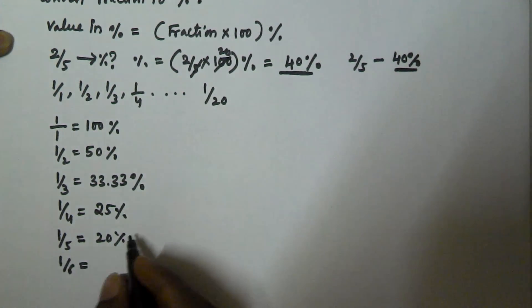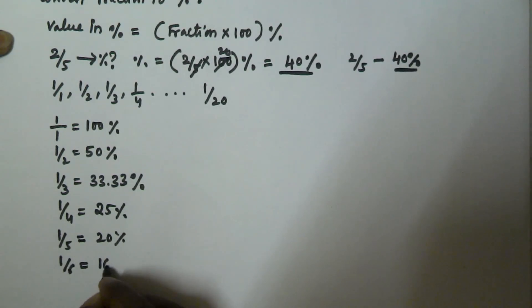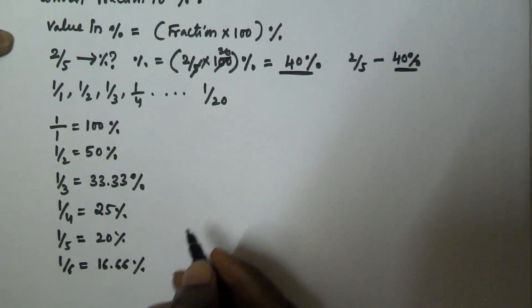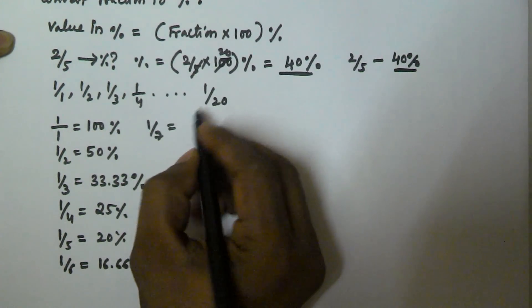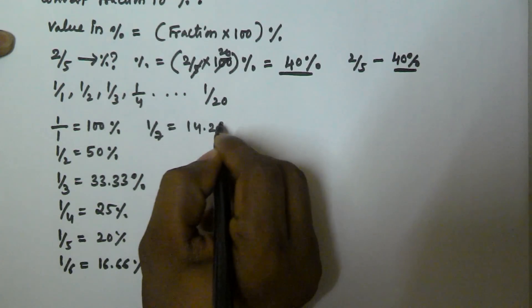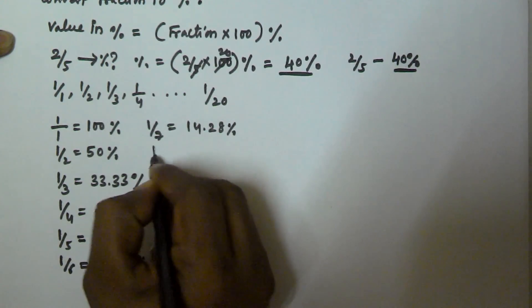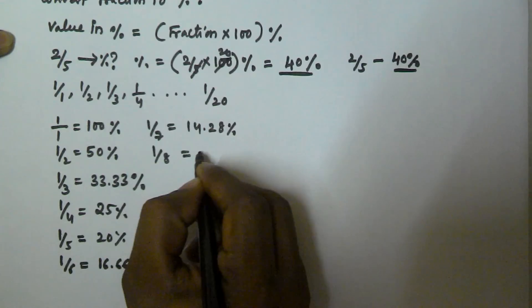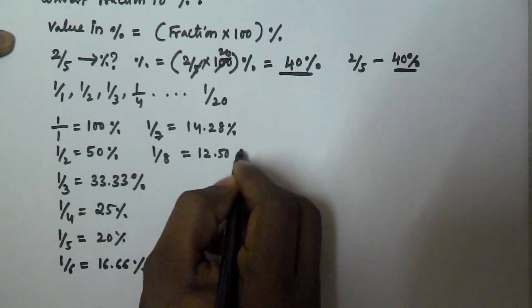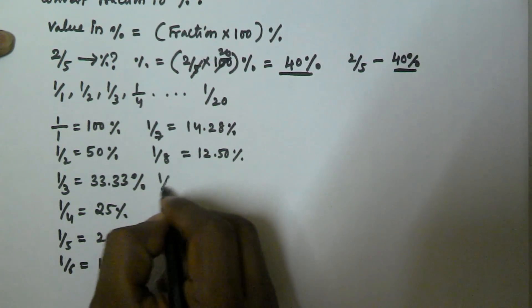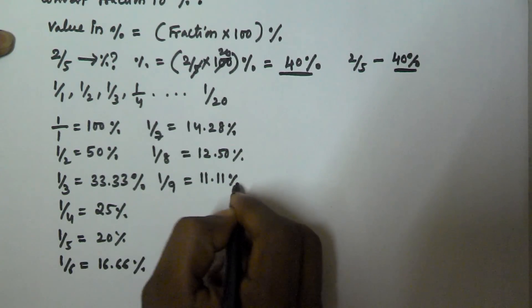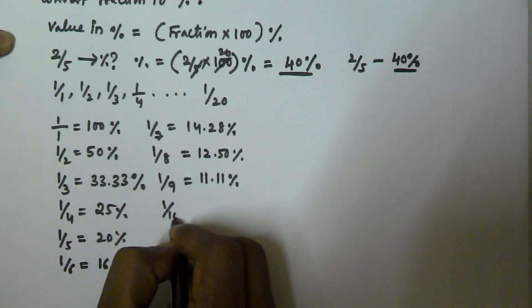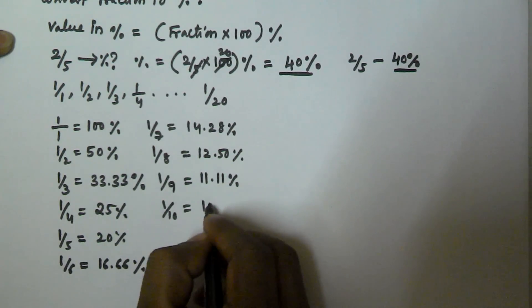Continuing: 1/6 is equivalent to 16.66%, 1/7 is equivalent to 14.28%, 1/8 is equal to 12.50%, 1/9 is equal to 11.11%, and 1/10 is equal to 10%.